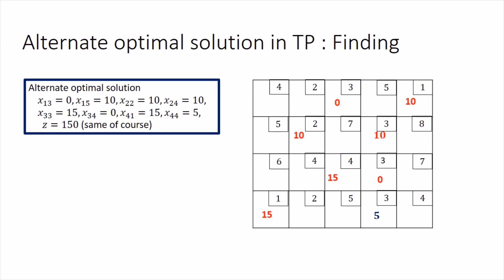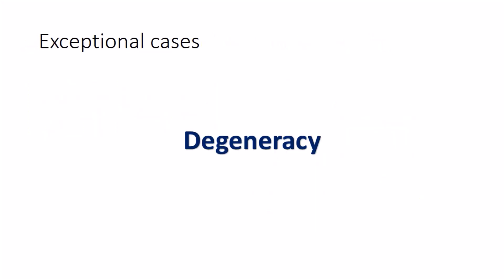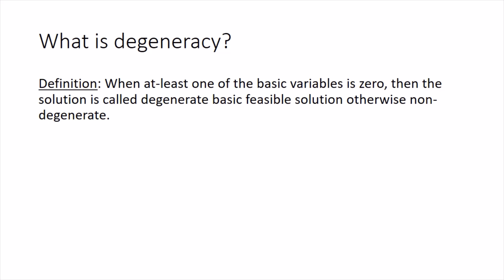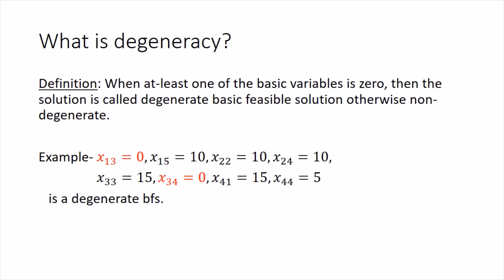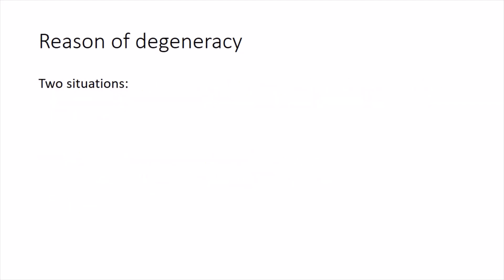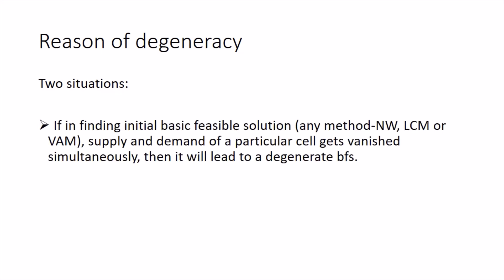This finishes the first exceptional case. Now let's explore the second exceptional case: degeneracy. When at least one of the basic variables is zero, the solution is called a degenerate basic feasible solution; otherwise it is a non-degenerate solution. There are two situations basically responsible for degeneracy: the first occurs when finding an initial basic feasible solution, and the second during the UV method for finding the optimal solution.